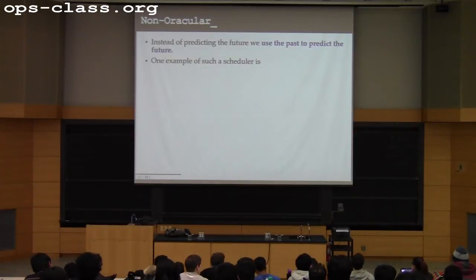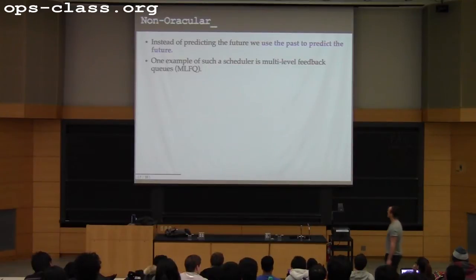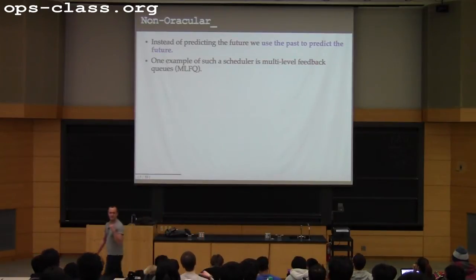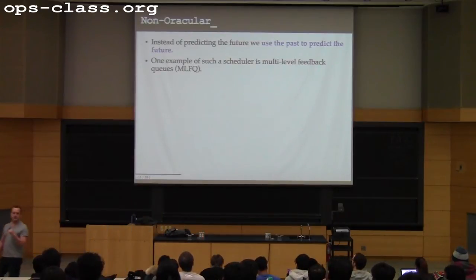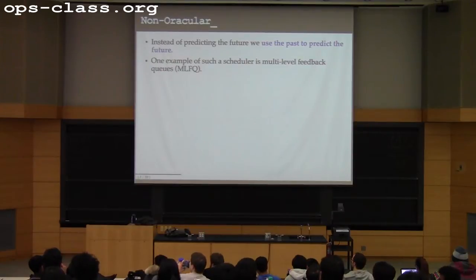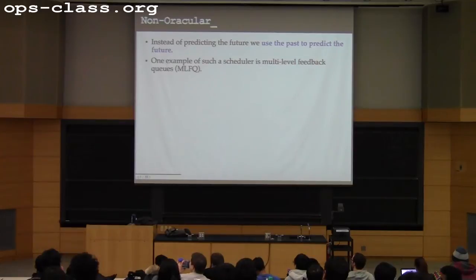One example of a scheduler we discussed is the multilevel feedback queue. The rotating staircase doesn't really use historical information — it doesn't move threads between queues to reflect how interactive they are. So it's actually even simpler than the MLF queue; it doesn't use any information about the past.